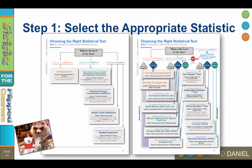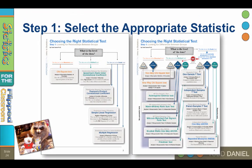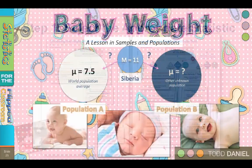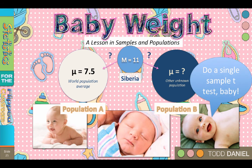Exploratory data analysis will help you decide what test to choose. However, since we're still learning, I will provide you with clean data sets most of the time. Notice that the names of the tests are color-coded to match the levels of data — nominal, ordinal, and scale. So for our baby weight example, we will be comparing the Siberian sample mean to the world population mean, and this would be the setup for a single sample t-test.